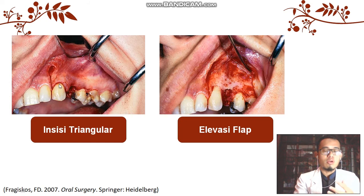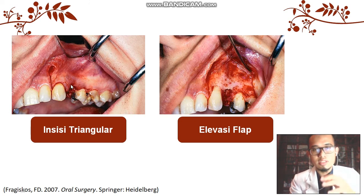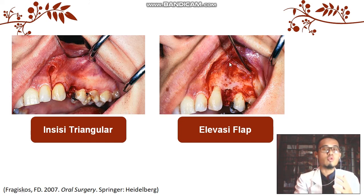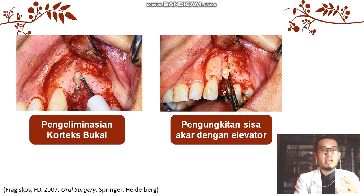Selanjutnya kita lakukan elevasi. Jika desain flap mencakup satu gigi di anterior dan satu gigi di posteriornya, maka akses akan adekuat. Insisi yang digunakan adalah full thickness — insisinya sampai menyentuh permukaan tulang. Kemudian kita lakukan elevasi menggunakan raspatorium sehingga akan terbuat mukoperiosteal flap, sehingga akan tampak korteks tulang dengan jelas karena yang dielevasi adalah jaringan ikat sekaligus periosteumnya. Dengan demikian akses visual dan akses instrumentasi juga optimal. Kemudian tahapan selanjutnya kita eliminasi korteks bukal menggunakan rotary instrument — bur tulang, bisa menggunakan round bur — sehingga akan tampak fragmen gigi yang terpendam.